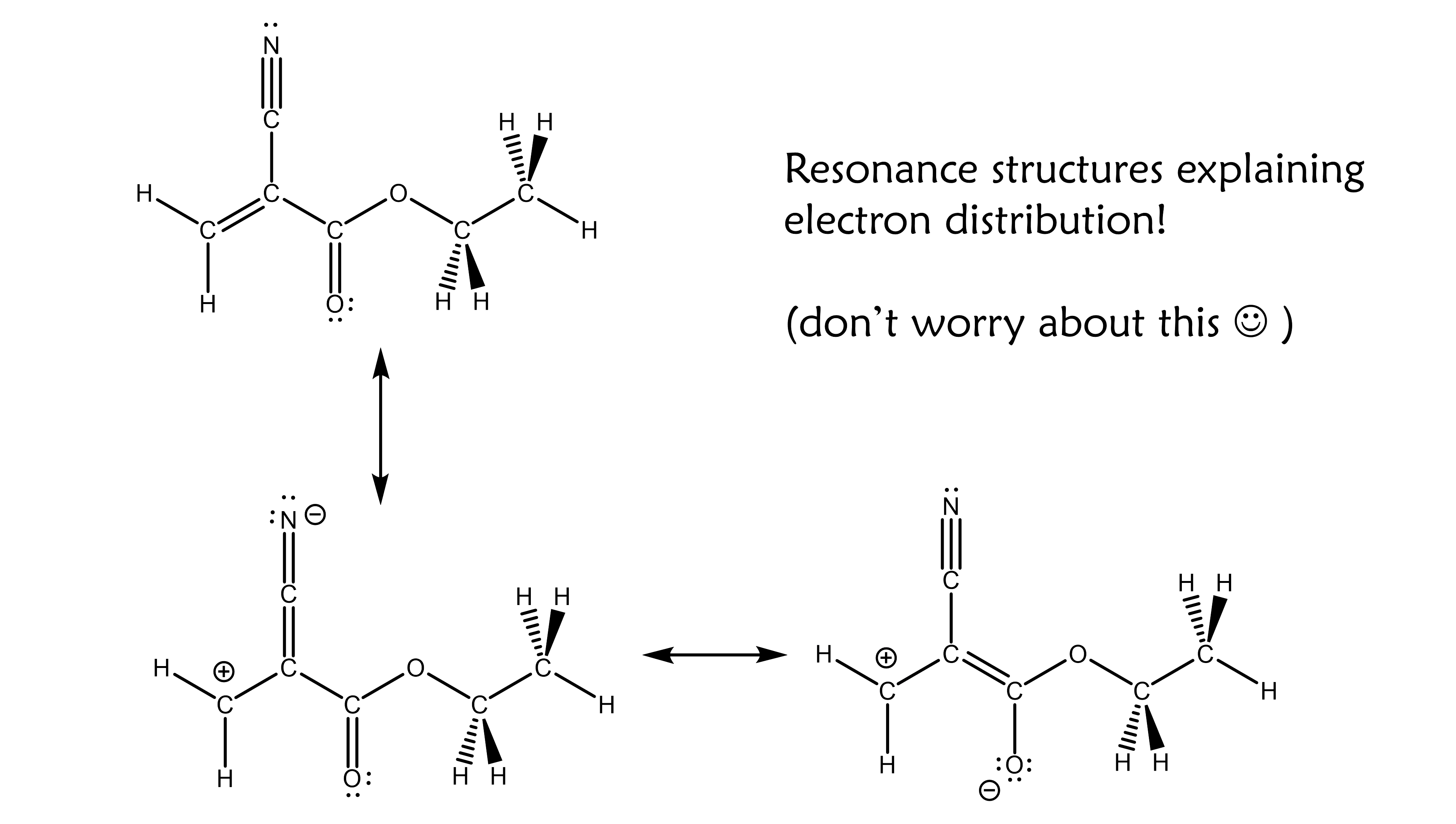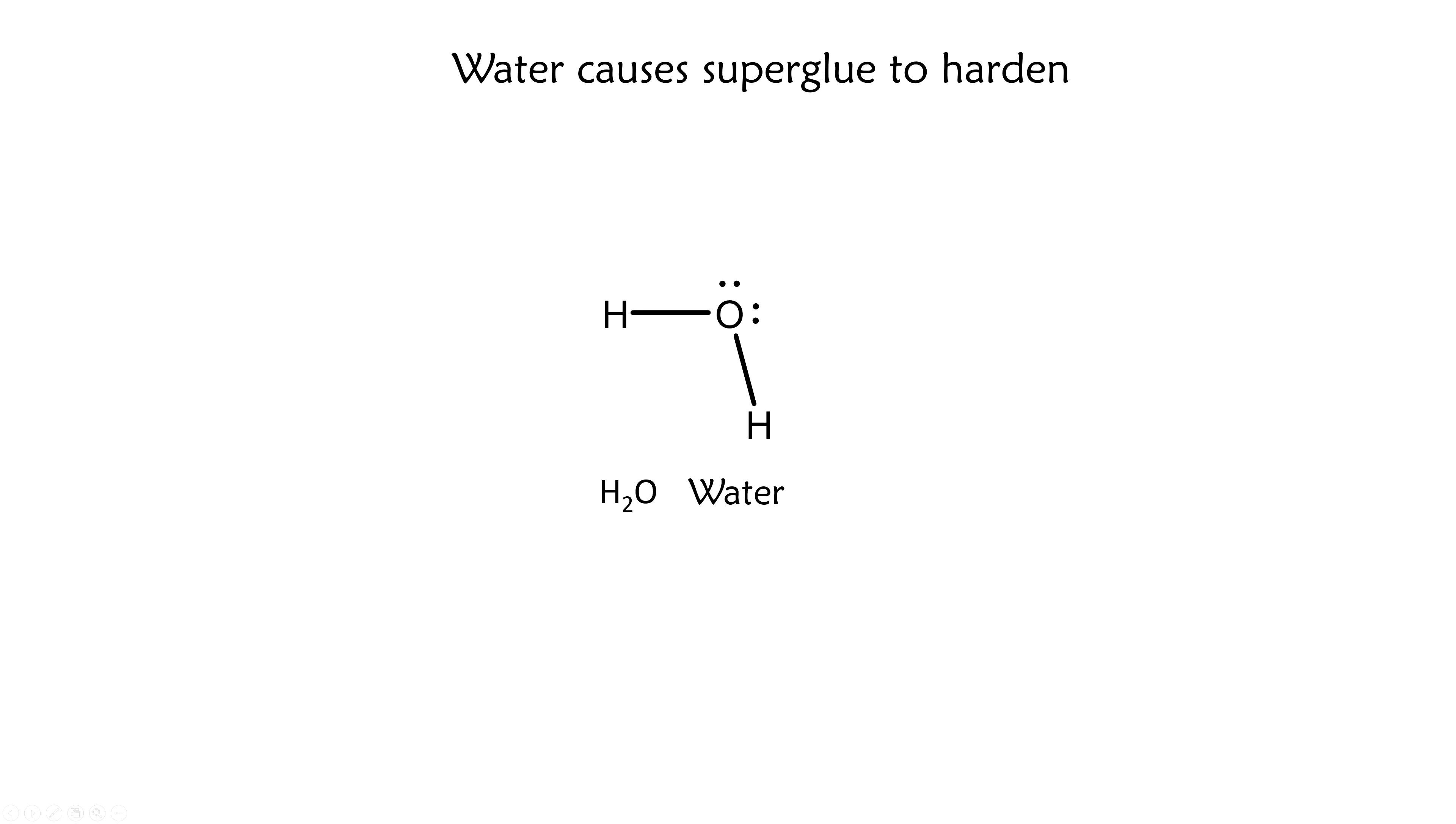If you're curious though, here are the most relevant resonance structures. Okay, we've heard that water vapor causes superglue to harden. Water is composed primarily of H2O, with traces of H3O+, hydronium, and OH- hydroxide.